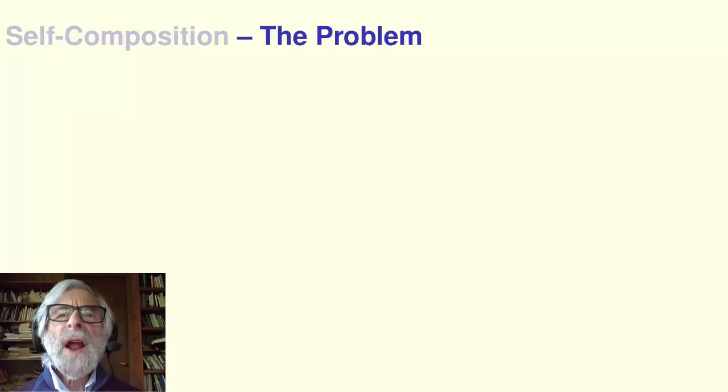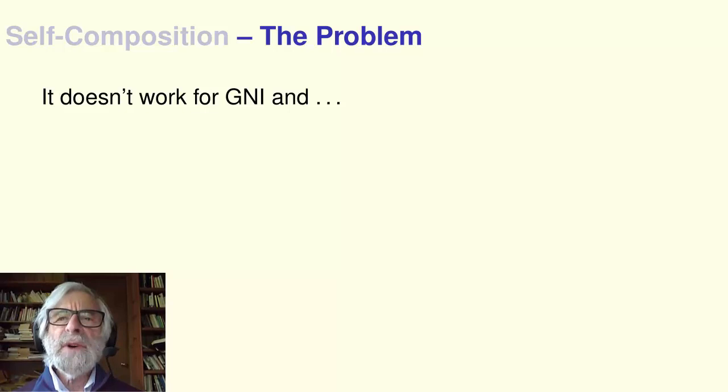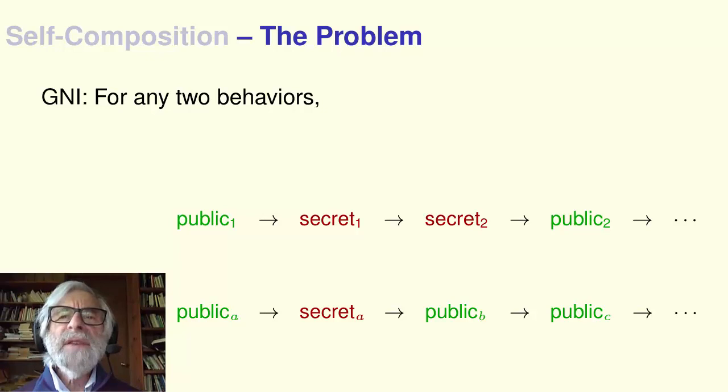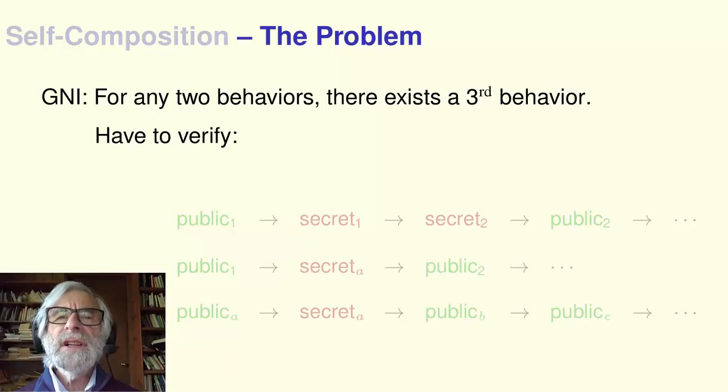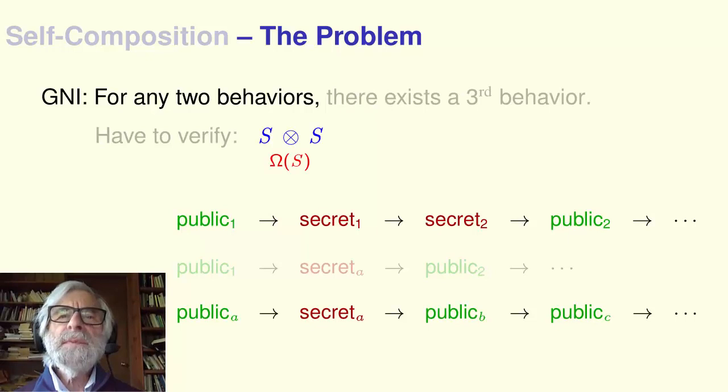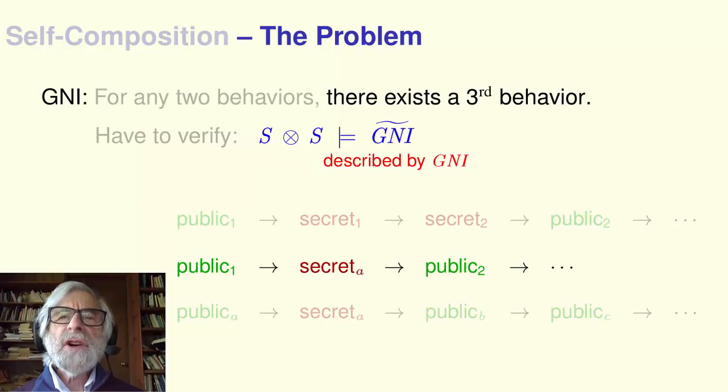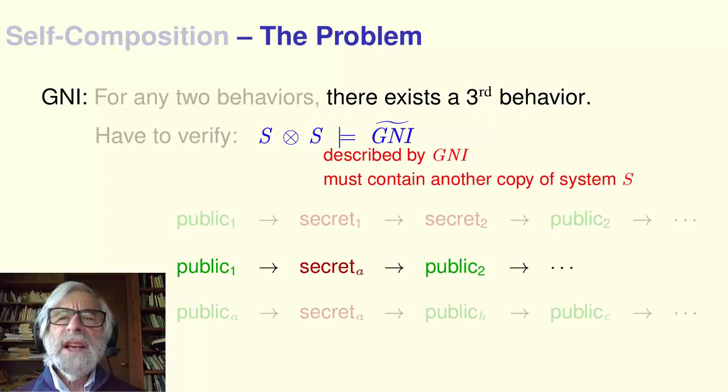There's a problem with this kind of self-composition. It doesn't work for some security hyperproperties, including GNI. GNI says that for any two behaviors of S, there exists a third behavior of S satisfying a certain condition. With self-composition, these two behaviors are described by this big system, omega of S. The third behavior of S is described by GNI. So GNI tilde must contain system S, which it can't because GNI tilde is a property, and how can you put a system in a property?